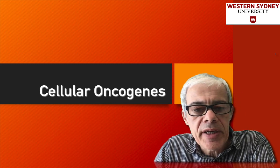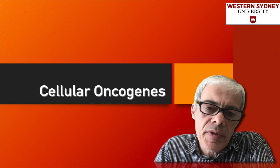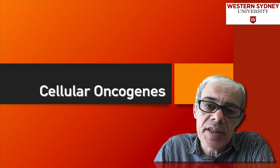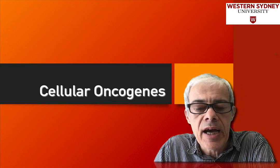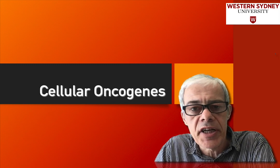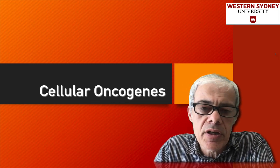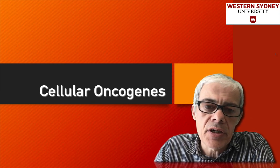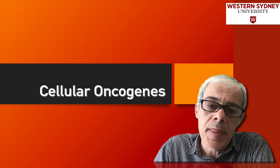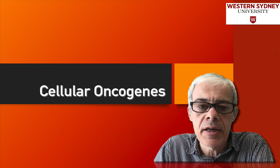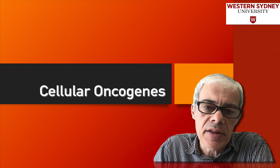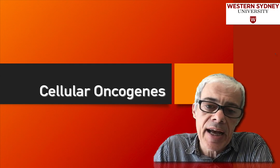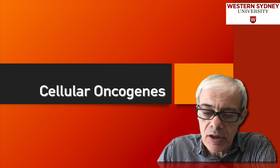What we're going to be doing now is start to focus on some of the actual genes or proteins within a cell that are perturbed in cancer. There are two broad categories of genes we're going to discuss. In this lecture we're going to be discussing cellular oncogenes, and in the following lecture we're going to discuss tumor suppressor proteins or tumor suppressor genes.